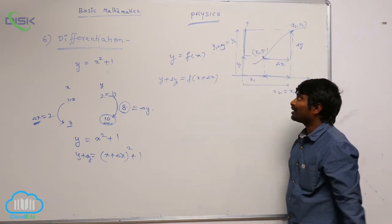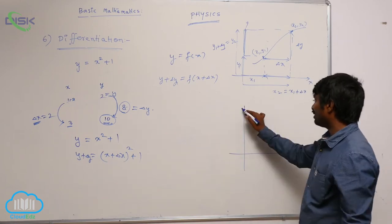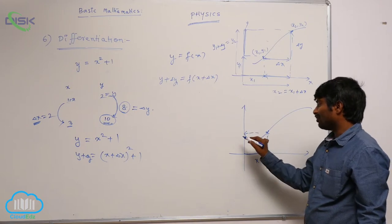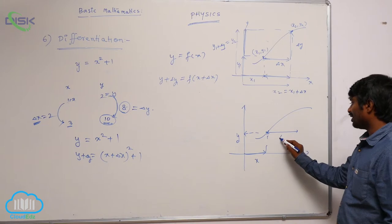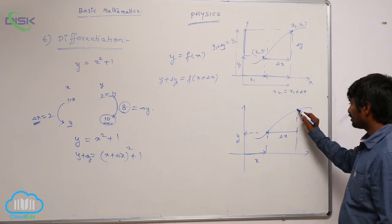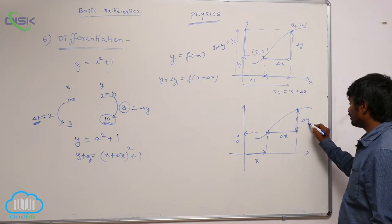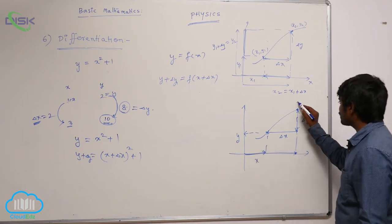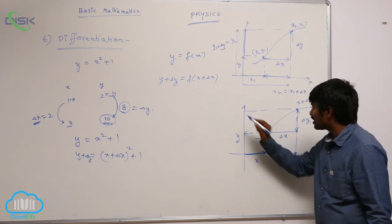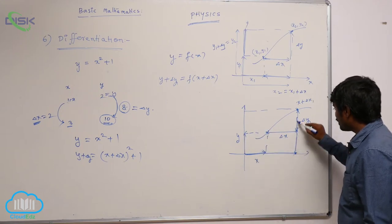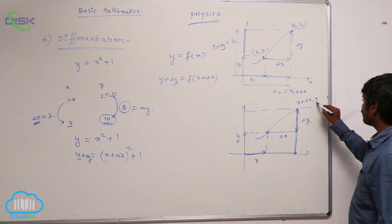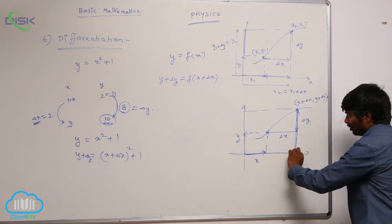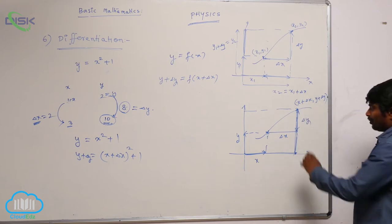In the same way, instead of using suffixes 1 and 2, let me take one arbitrary point. For a particular value of x, the value is y. If I go for a delta x increment, I reach a new point with a delta y increment. So this point is x plus delta x, and the corresponding y value is y plus delta y. When x changes by delta x, y changes by delta y.